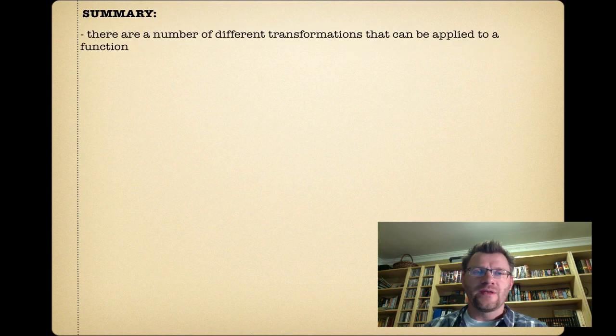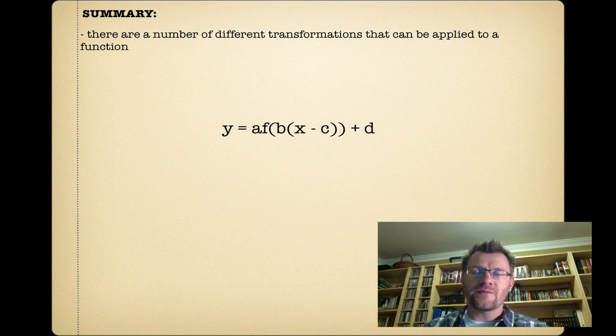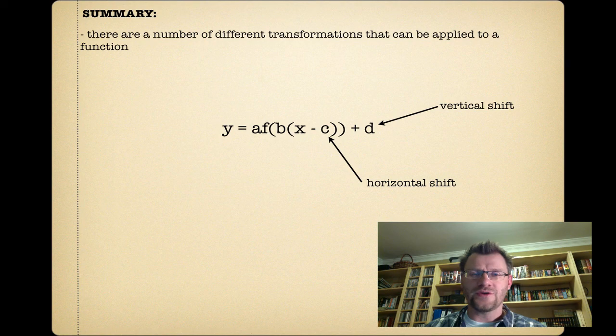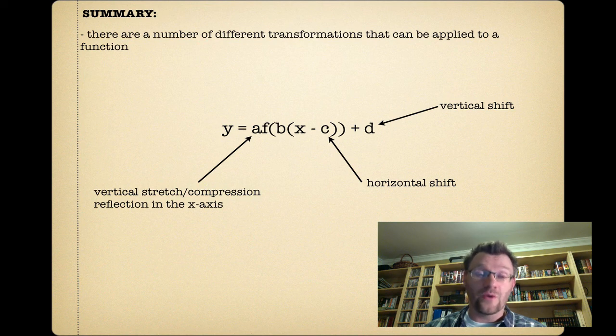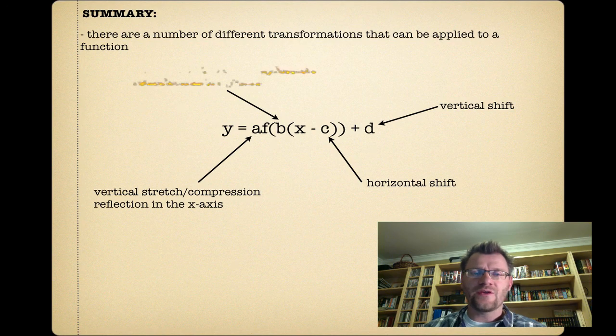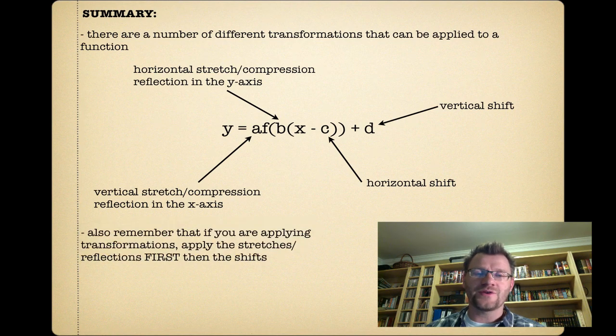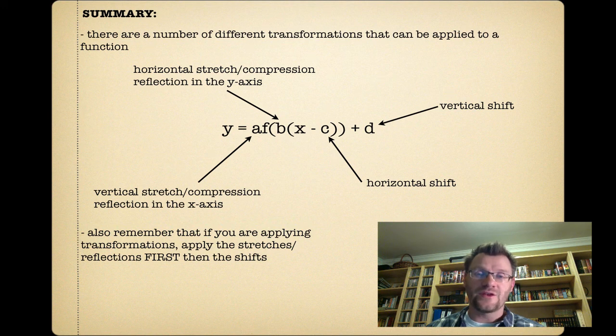So in summary, there are a number of different transformations that can be applied to a function. If this is our starting function where y = a·f(b(x − c)) + d: the d value is your vertical shift; the c value is your horizontal shift; your a value controls either a vertical stretch or compression, or a reflection in the x-axis because your y-value is changing; and your b value is a horizontal stretch or compression and a reflection in the y-axis. Also remember, if you're applying transformations, apply the stretches and reflections first, then do the shifts.